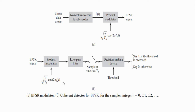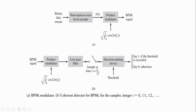In coherent detection of binary phase shift keying, the given binary phase shift keying signal is multiplied with the carrier signal in the product modulator. The same carrier signal used in the transmitter side is used in the receiver side. The output of the product modulator is given into the low-pass filter. The low-pass filter removes the double frequency term and allows only the zero frequency term. The sampler samples the signal for every Tb time period.